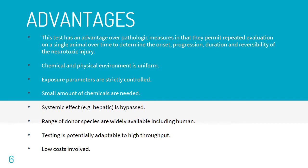There are some advantages of neurotoxicity testing. One advantage over pathologic measures is that they permit repeated evaluation on a single animal over time to determine the onset, progression, duration, and reversibility of the neurotoxic injury. Additionally, the chemical and physical environment is uniform with exposure parameters that are strictly controlled. Furthermore, only a small amount of chemicals is needed to conduct this test.